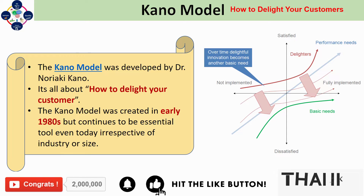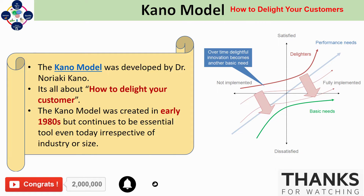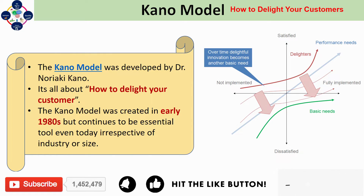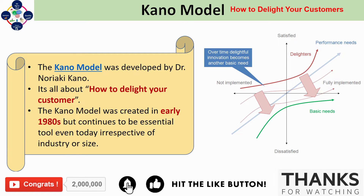Examples include power steering in a car or the camera function in a mobile phone. My approach for putting these needs to good use: first, develop the identified basic and performance features so they continue to satisfy customers with no decline in quality. Second, focus on developing identified excitement features, as these will eventually transform into basic must-haves, so innovate new features to continue adding the wow factor. Third, work on cost optimization for indifferent features and avoid overwhelming the customer — more is not always better.